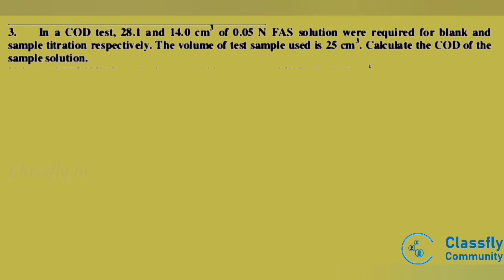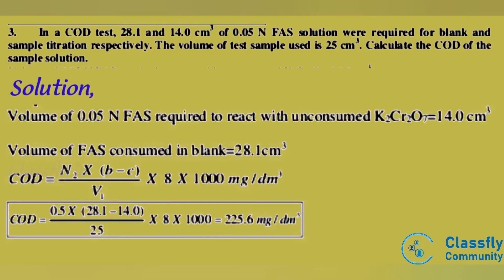Third problem: in a COD test, 28.1 and 14.0 cm³ of 0.05 N FAS solution were required for the blank and sample titration respectively. The volume of test sample used is 25 cm³. Calculate the COD. Solution: given that the volume of 0.05 N FAS required to react with unconsumed K2Cr2O7 = 14.0 cm³, and the volume of FAS consumed in the blank = 28.1 cm³.